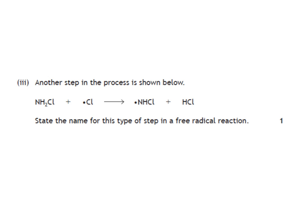What's the name of this step? You have three choices: initiation, propagation, or termination. In this example we've already got a free radical to start with, so it can't be initiation. What happens here though is that it's forming a new or different free radical, so this is known as propagation.